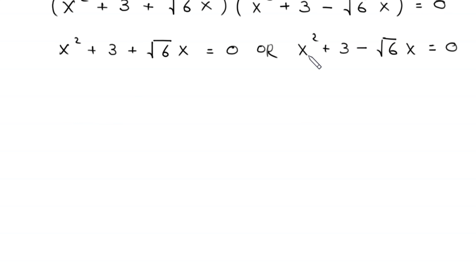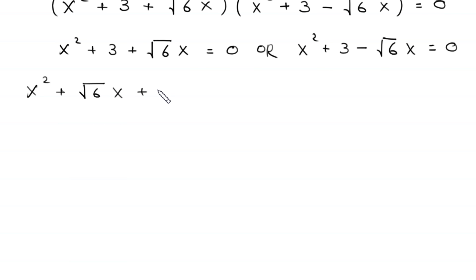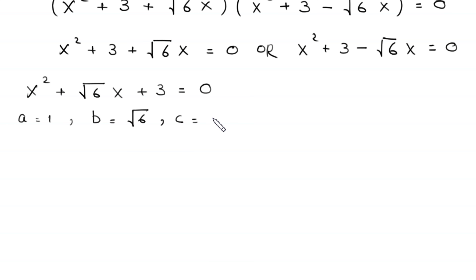We solve the first quadratic equation. Rearranging the terms gives x squared plus root 6 times x plus 3 equals 0. This equation is not factorable, so we use the quadratic formula. Here a equals 1, b equals root 6, and c equals 3.